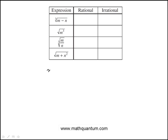In this question we're told that m is 4 and n is 2, and we have to find which of the expressions are rational or irrational numbers. So I'll start with this one.